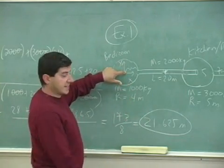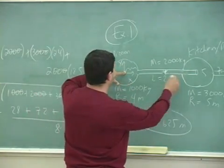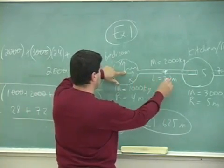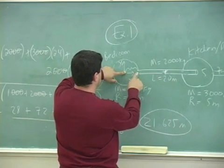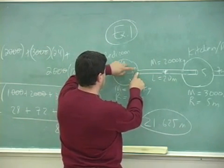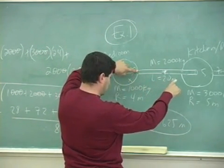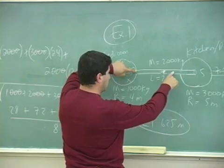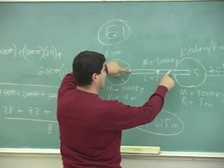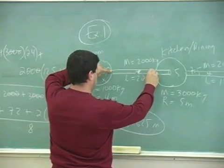So now let's actually draw it. Where is 21 meters? This is 4 plus another 17, so somewhere about here — that puts us right around 21 meters.